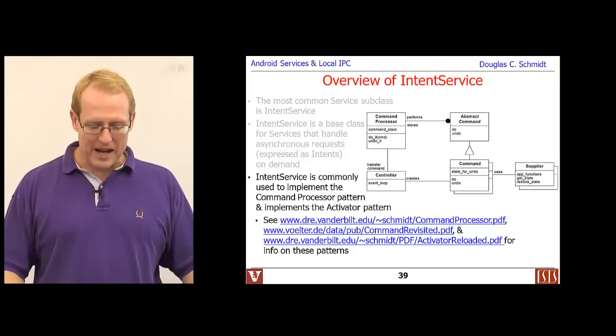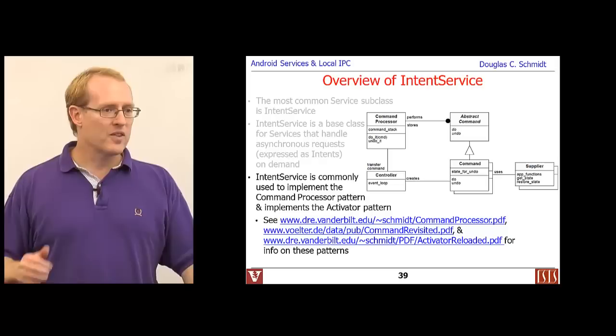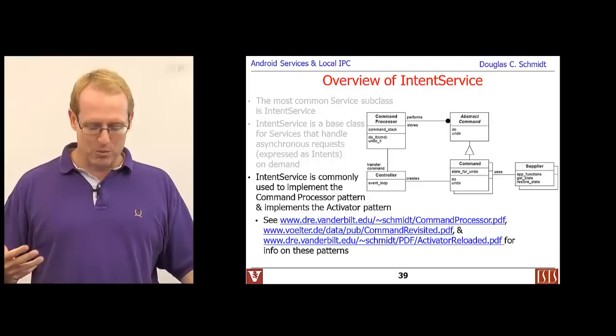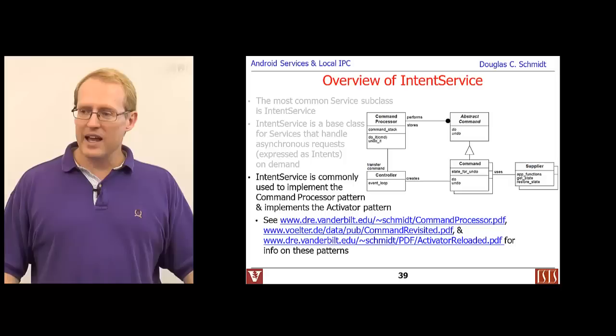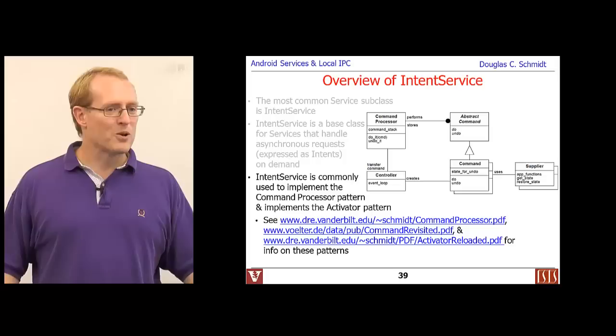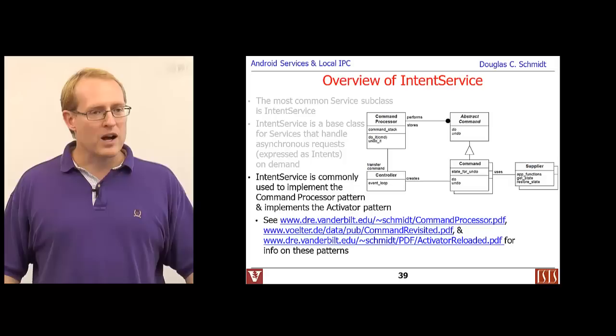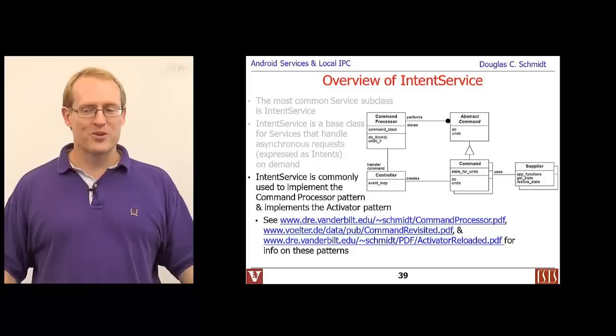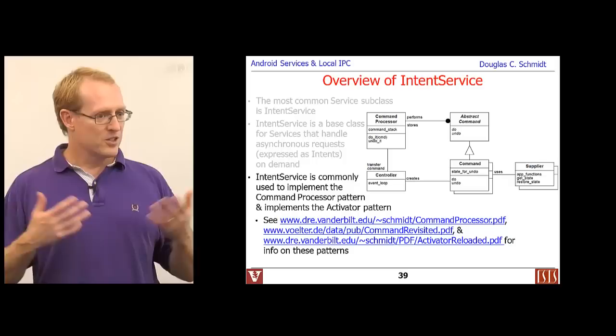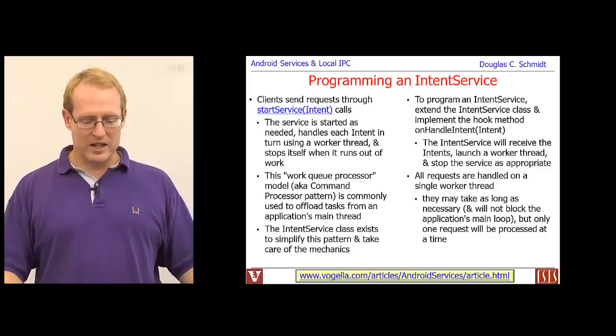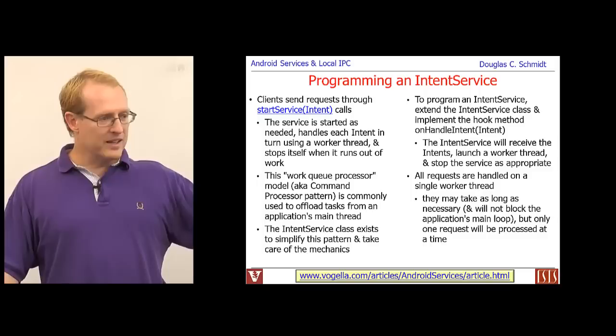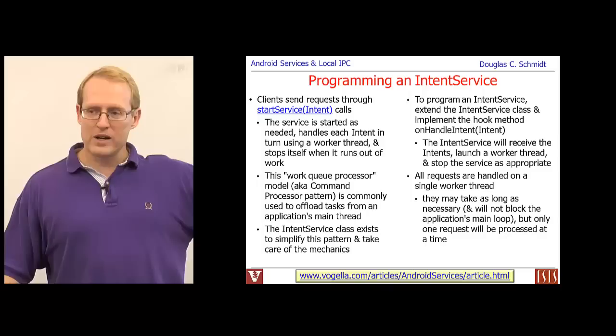The patterns that IntentService embodies are the command processor pattern — a POSA volume one pattern — and the activator pattern, which is a pattern for launching services or processing on demand. Let's take a quick look at the IntentService source code. If you look at the implementation, it defines a nested class called ServiceHandler that extends Handler, and it's passed a looper connected to a separately spawned HandlerThread.